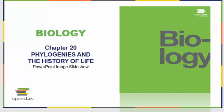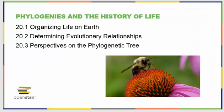Chapter 20 is our final evolution chapter, and it looks at the phylogenies and history of life. We'll closely look at how we choose to organize life on Earth, how we determine or define evolutionary relationships so we can do that, and then what phylogenetic trees can actually look like.